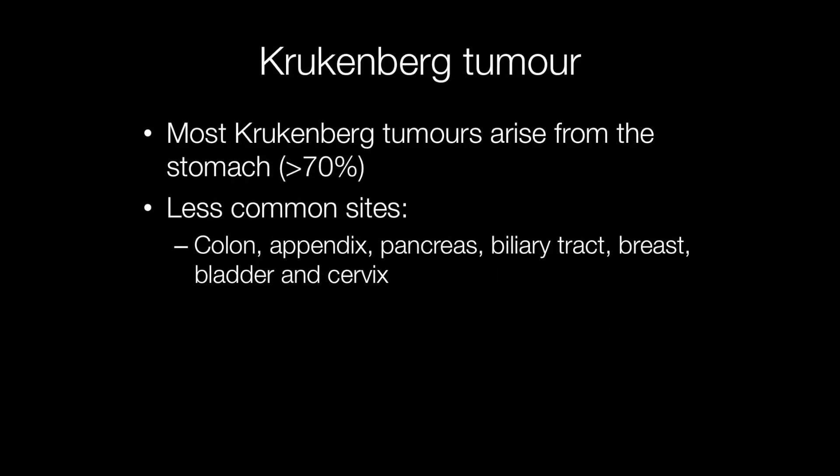At least 70% of Krukenberg tumours arise from the stomach, usually the pylorus. Less common sites include the colon, appendix, pancreas, biliary system, gallbladder, breast, bladder, and cervix.